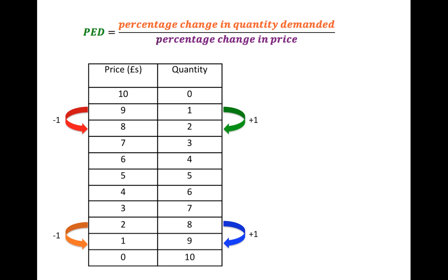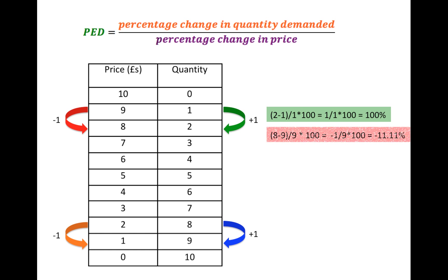Let's do this mathematical example. For the first case, demand will increase by one unit, but in relative terms, since we're moving from one to two units, it's increasing by 100%. The price is decreasing by one unit, but in percentage terms it's decreasing by 11.11% — we're moving from 9 to 8 in price. As a consequence, the PED is calculated as minus 9, which is relatively elastic.